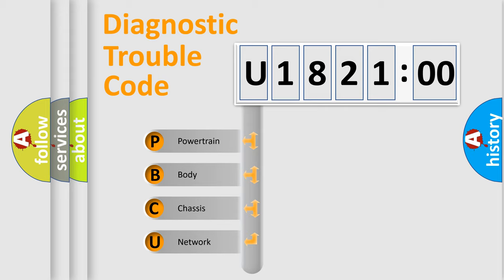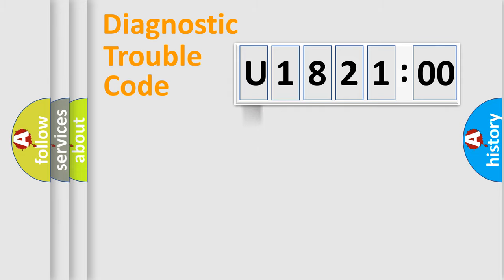We divide the electric system of automobile into four basic units: Powertrain, Body, Chassis, and Network. This distribution is defined in the first character code.